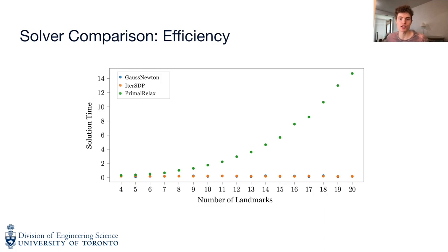Comparing the time efficiency of each method, we find that while the primal relaxation solution time increases exponentially with the number of landmarks, the local solver and iterative SDP do not. This, combined with the global optimality of the iterative SDP method, make a strong case for its use in stereo localization.